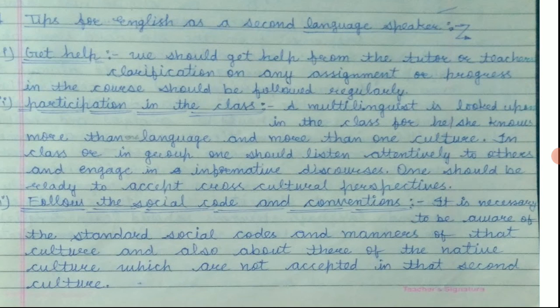Now we come to a common question: what should a person do who is learning English as a second language? Here are tips for ESL speakers. First of all, get help — we should get help from the tutor or teachers. Clarification on any assignment or progress in the course should be followed regularly. We should be in constant touch with our tutor because he is the person who will provide us the atmosphere, the environment, and the correct use of English.